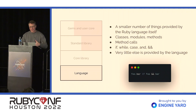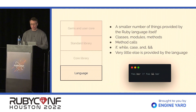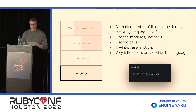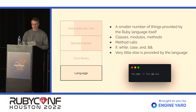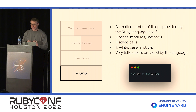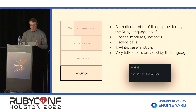So at the bottom, there's the language — a very small number of things provided by Ruby itself. That's things like classes, modules, methods, method calls, and some control structures like if, while, case, and, or — things like that. But it's actually a really small subset. Very little else is provided by the language. In the code example, we've got if, and an and, and a method call — and that's really all the language provides.